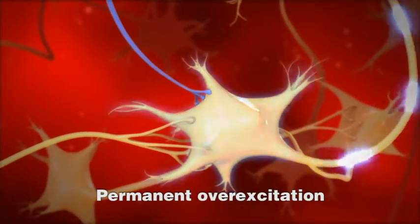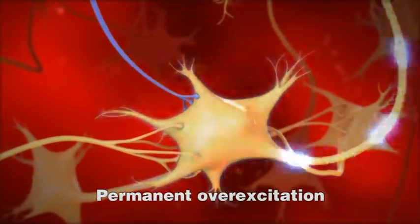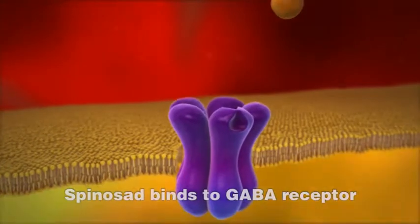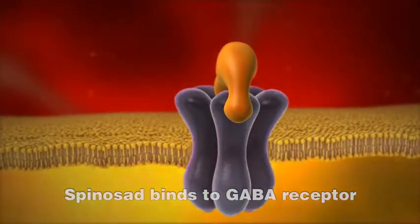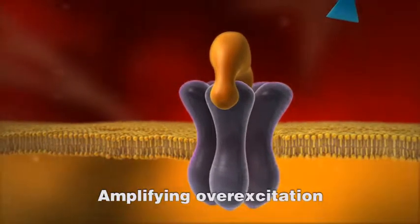The result: permanent neuronal over-excitation. Additionally, spinosad impairs the inhibitory function of the GABA receptor, amplifying the over-excitation.